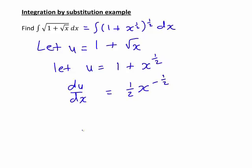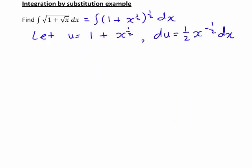And then rearranging this, that means we get du is equal to a half x to the negative a half dx. So this is what we have to work with so far. I'm just going to leave a bit of space because I'm going to do a bit more juggling around in here in a minute. But this is what we're starting with.